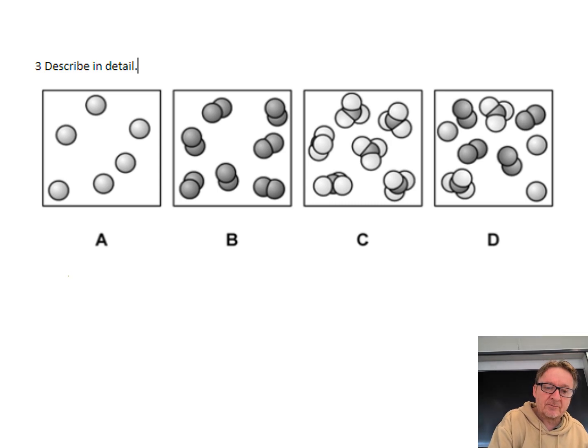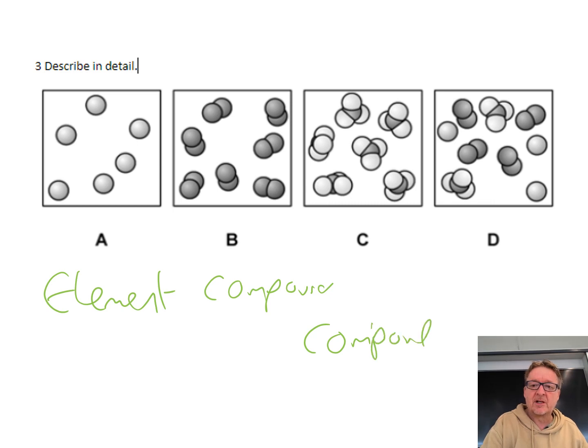A is an element, B is a compound because there's two things stuck together, C is also a compound, and D is a mixture because there's lots of different things in there.